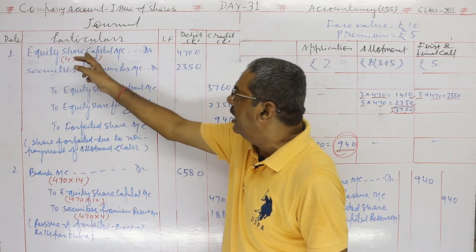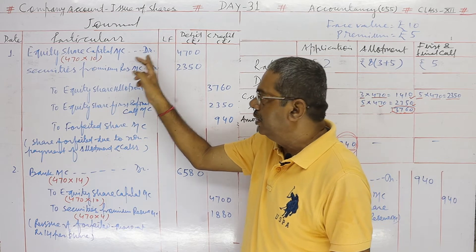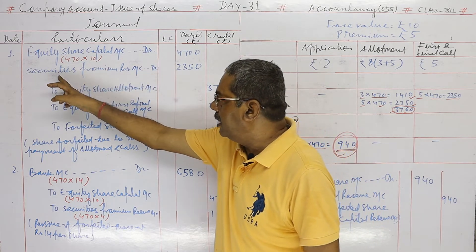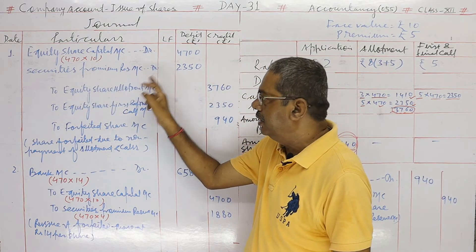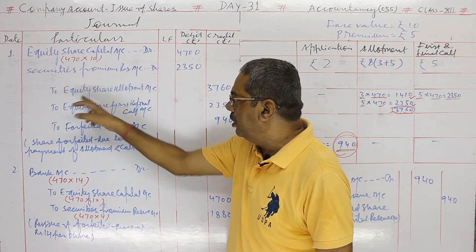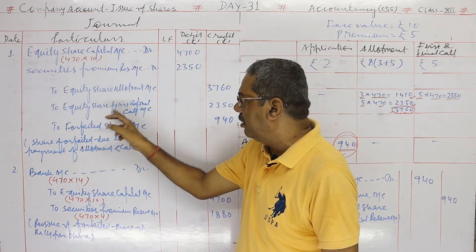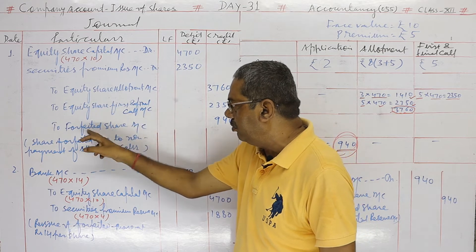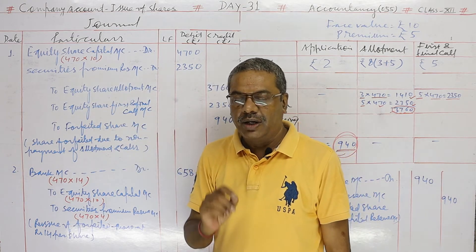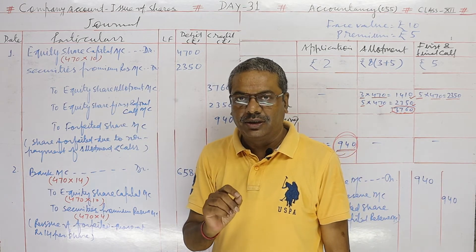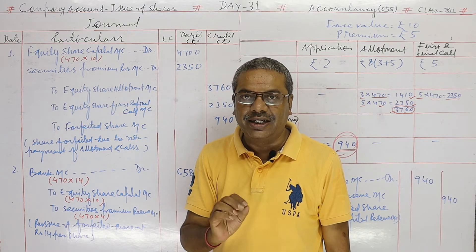Equity Share Capital Account debit; Security Premium Reserve Account debit; To Equity Share Allotment Account; To Equity Share First and Final Call Account; To Forfeited Share Account. The situation here is: the company did not receive the security premium amount, and the shares were forfeited.